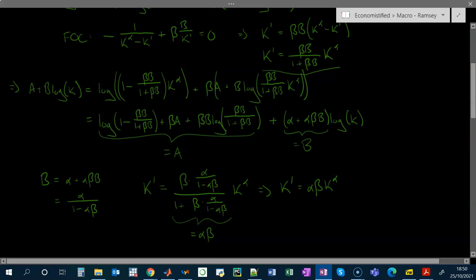So in this regard, the Ramsey model with log utility and full depreciation and Cobb-Douglas production function is exactly like the Solow model in that we have a constant savings rate. However, in this case, S is not exogenous. Households are optimally choosing how much they want to save in order to maximize their lifetime utility.